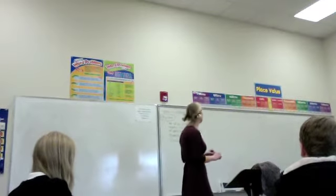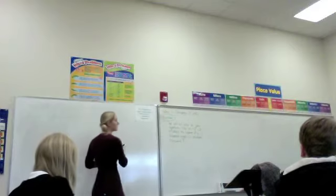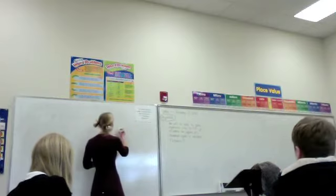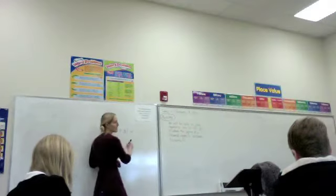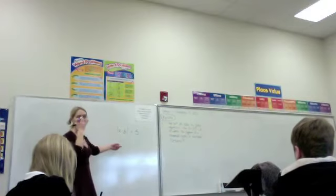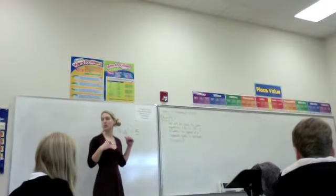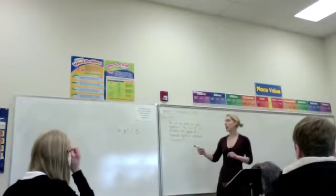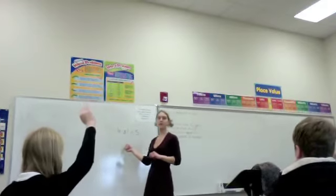So, in the last section, what we did was look at the absolute value of binomials, and we set them equal to something. So, we solved things like x minus 3 equals 5. And how did we learn how to solve this? What did we do? I should see all hands up because I know you all know how to do this. How did we solve this?